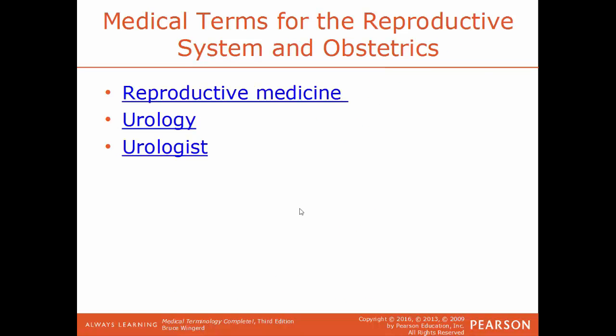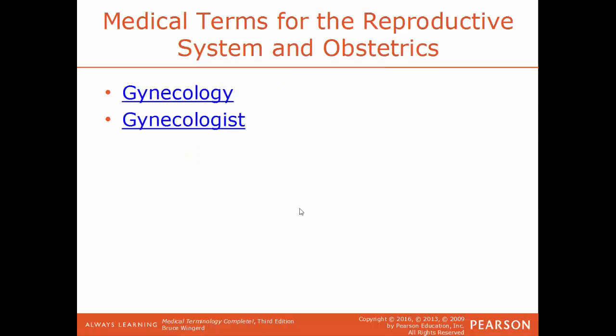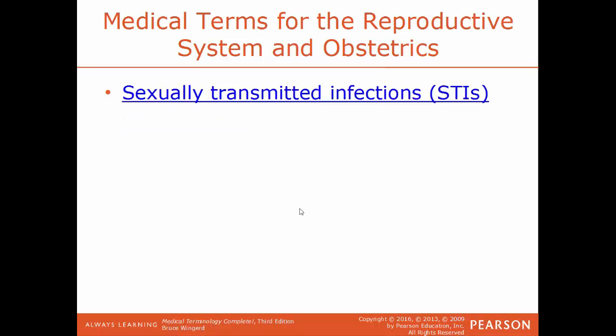Some medical terms for the system: reproductive medicine is the field dealing with diagnosis, management, and prevention of reproductive issues. Urology deals with the functions and disorders of the urinary system — a specialist is a urologist. Gynecology deals specifically with the functions and diseases of the female reproductive system — a specialist is a gynecologist. STIs, or sexually transmitted infections, formerly known as STDs, are diseases passed from person to person through sexual contact.